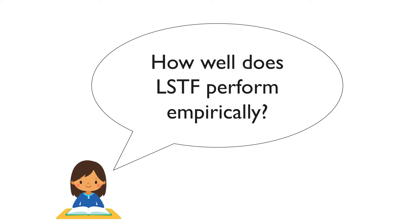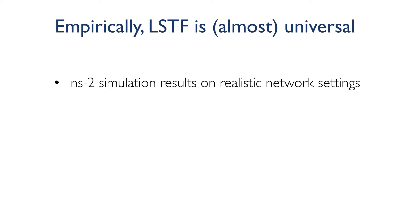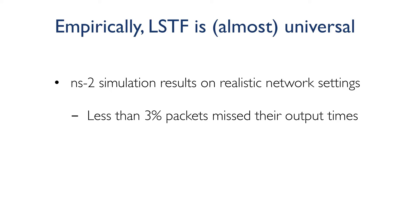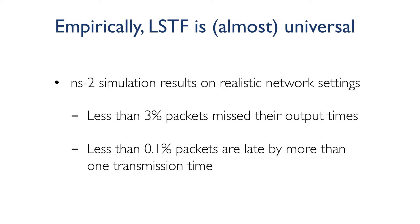These theoretical results establish that LSTF is as close to universal as any algorithm can get. But they do not give us a concrete measurement of this closeness. So we do empirical experiments using LSTF replay with NS2 simulations and study how close LSTF is to being universal under realistic settings. We find that for most cases, less than 3% of packets miss their target output times in an LSTF replay, and more importantly, less than 0.1% of packets miss their targets by more than one transmission time.